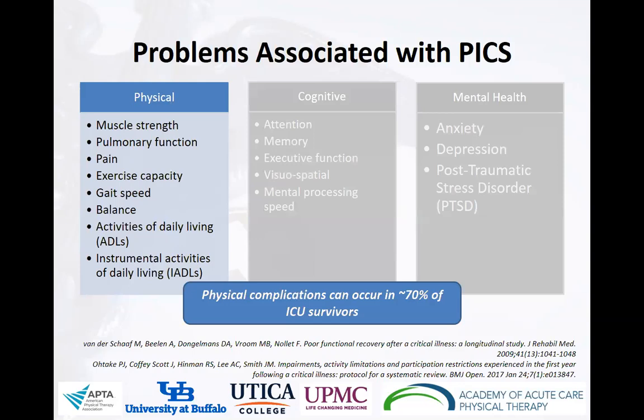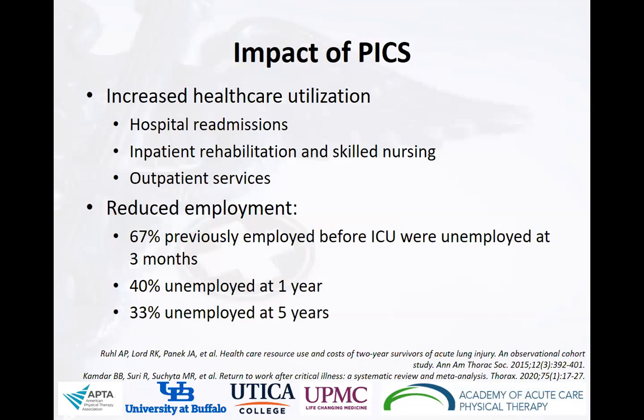Today, we're really going to focus on the examination, evaluation, and treatment of those physical problems, which can occur in up to 70% of survivors of critical illness. This is not to downplay the impact of the cognitive or mental health problems, and we certainly know that having those cognitive and mental health problems are part of the big picture, especially when we consider rehabilitation. We just want to focus on the details of those physical problems today.